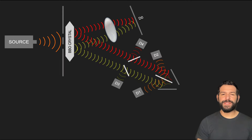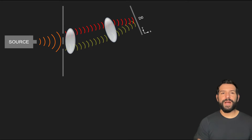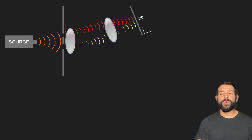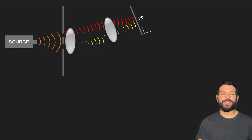To fully demystify the Delayed Choice Quantum Eraser, let's do a step-by-step description of all the different parts involved in this experiment. At its core, the setup consists of a variation of the double-slit experiment. We have a source of individual particles, a plate with two slits, and for now let's assume that right after the plate we have a couple of lenses that simply route the two waves emerging from the top and bottom slits onto the screen, here labeled as D0.